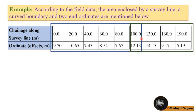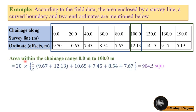That is from 0 to 100, we have to use our trapezoidal rule once. Then from 100 to 190, we have to use it again. Then I will show you the way of doing that. Here you can see area within the chainage 0 to 100 is 20 into this equation. You can see 9.67 is this offset, 12.13 is the final offset.